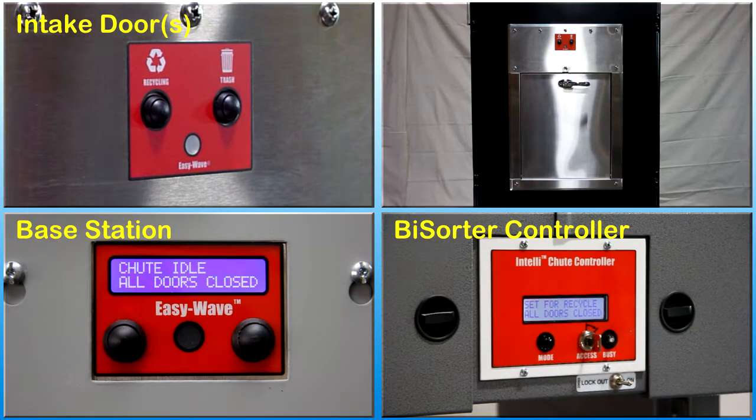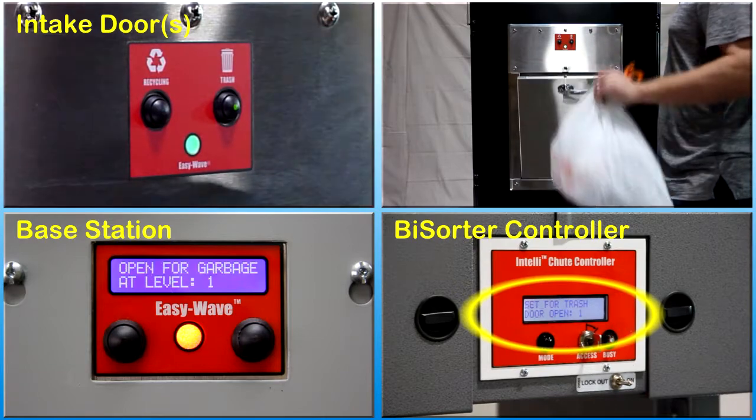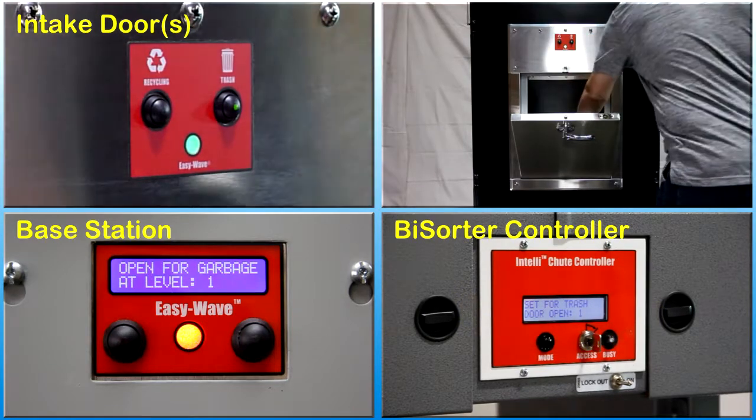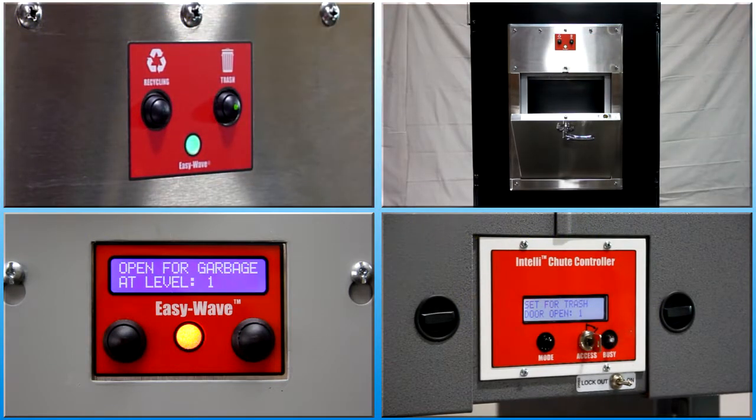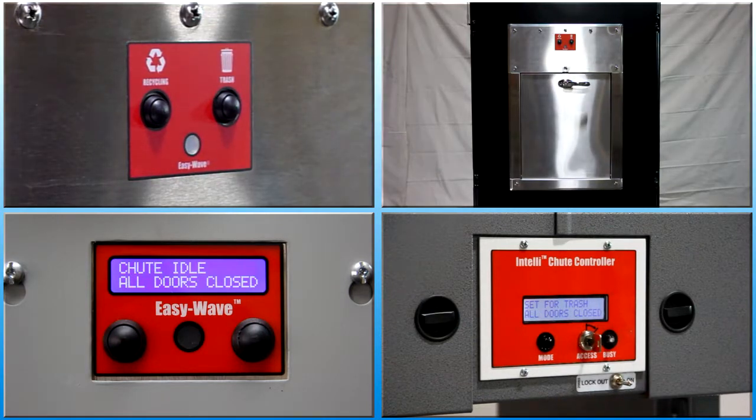To open a door for non-recycle materials, press and release the user interface trash button. The chute system operates automatically and waste accumulates in each container until the cart sensors detect the cart full condition.